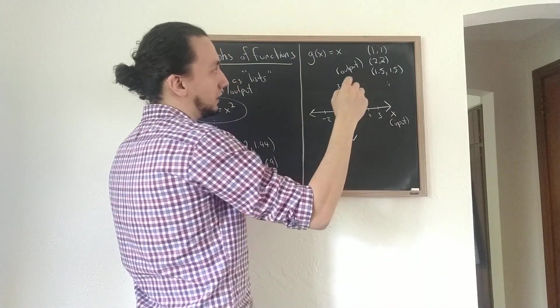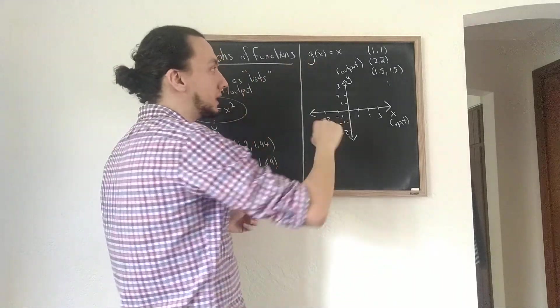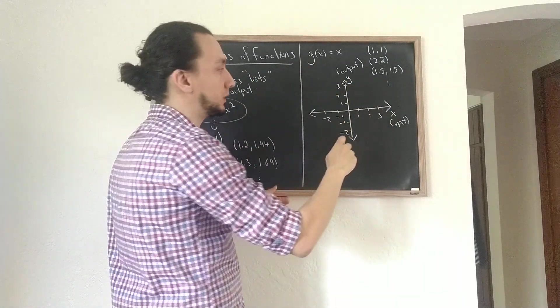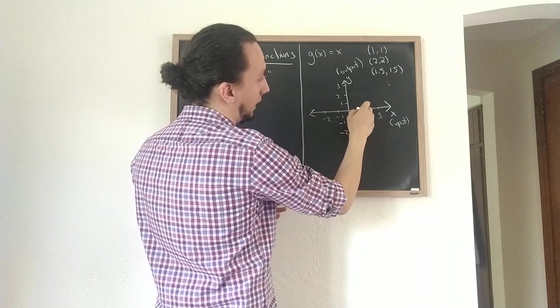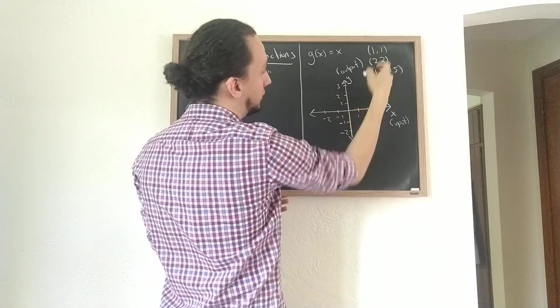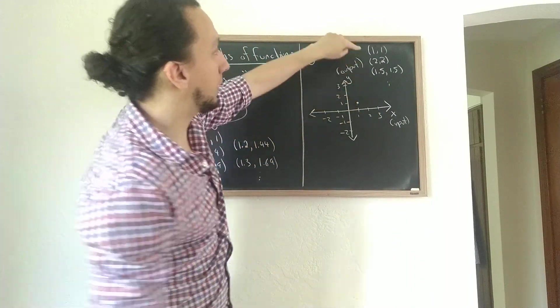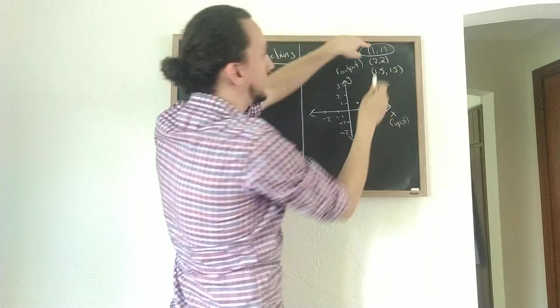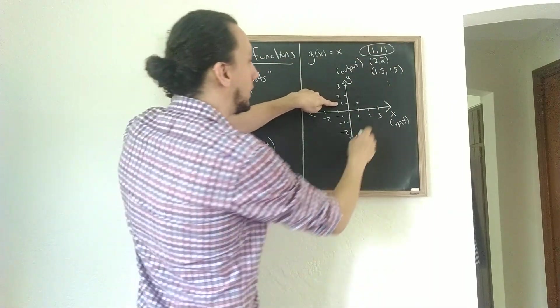Here I find my input, which is 1, and I go up to the output, which is also 1 in this case, and I draw a single point. This single dot represents this element of the list - it represents the fact that an input of 1 produces an output of 1.